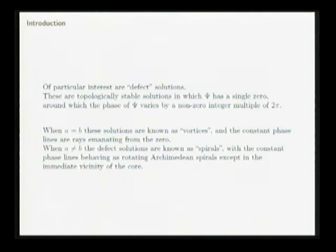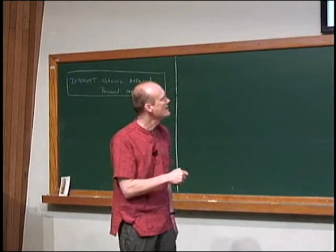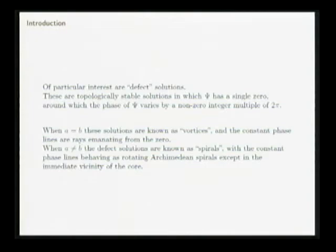If A is equal to B, the constant phase lines are rays emanating from the zero, so the phase of the order parameter is basically the polar angle theta, and in that case the solutions are known as vortices. If A is not equal to B, then the defect solutions are known as spirals, and the constant phase lines are no longer rays from the origin — they're now Archimedean spirals. In fact, the solution is not steady either; the spiral rotates in time, so the phase depends on theta and r, but also on time.